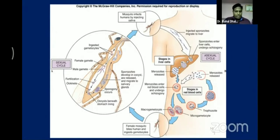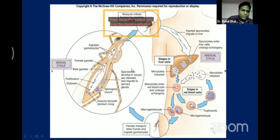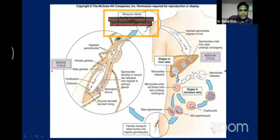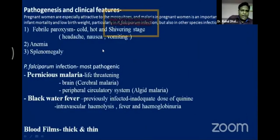The micro- and macrogametes can be ingested by another female Anopheles mosquito during a blood meal. In the mosquito, sexual reproduction occurs — in parasitology, sexual reproduction occurs only in the definitive host. Here the definitive host is the Anopheles mosquito. The gametes fertilize to form an ookinete, then sporogony occurs, releasing sporozoites ready to infect another person.